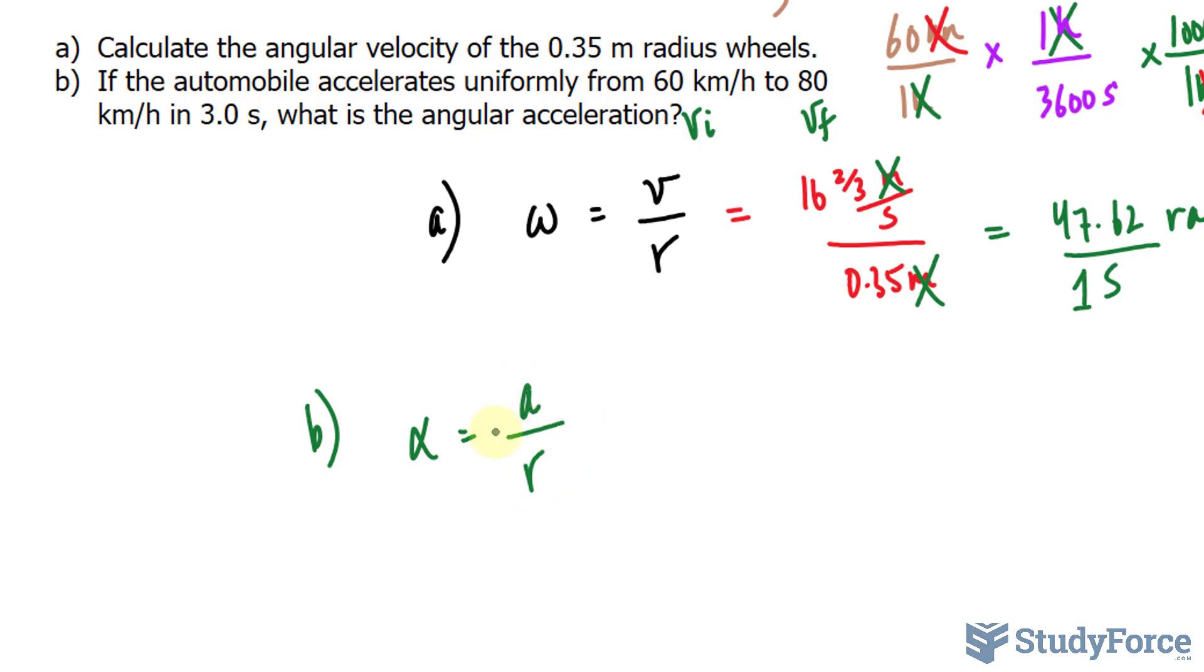To find the acceleration of anything, you take the difference in the velocity and you divide it by the time. So taking the difference between 80 and 60 or VF minus V initial, 80 minus 60 makes 20 kilometers per hour. So that is going to be delta V over time. This value right here is delta V.